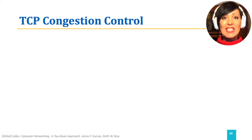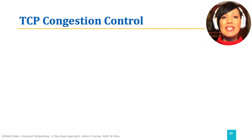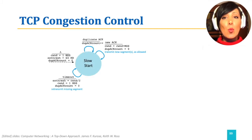We can illustrate the decision-making we discussed for TCP Congestion Control with an FSM. The process starts in a slow start state. In this state, as we discussed, CWND is increased by 1 MSS for every received ACK.